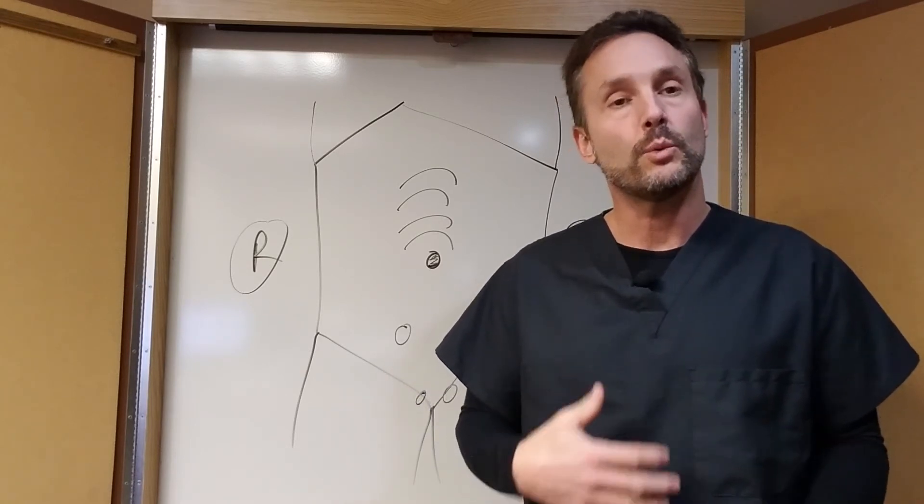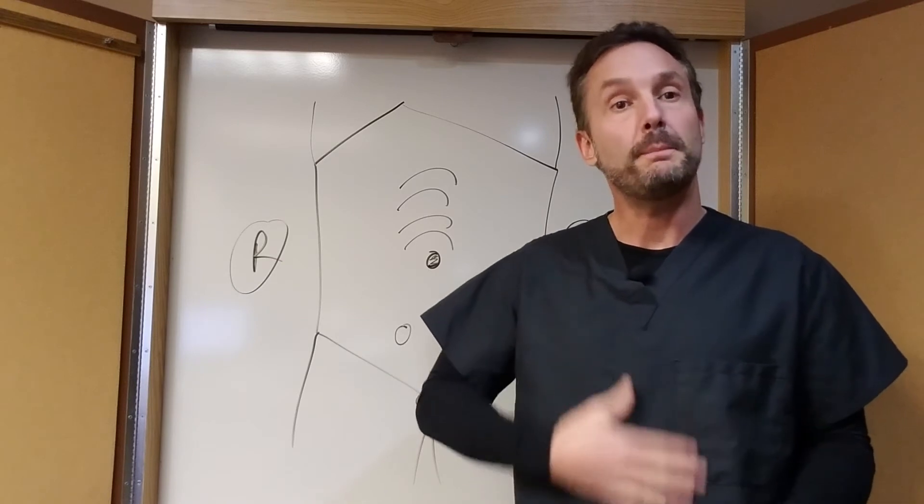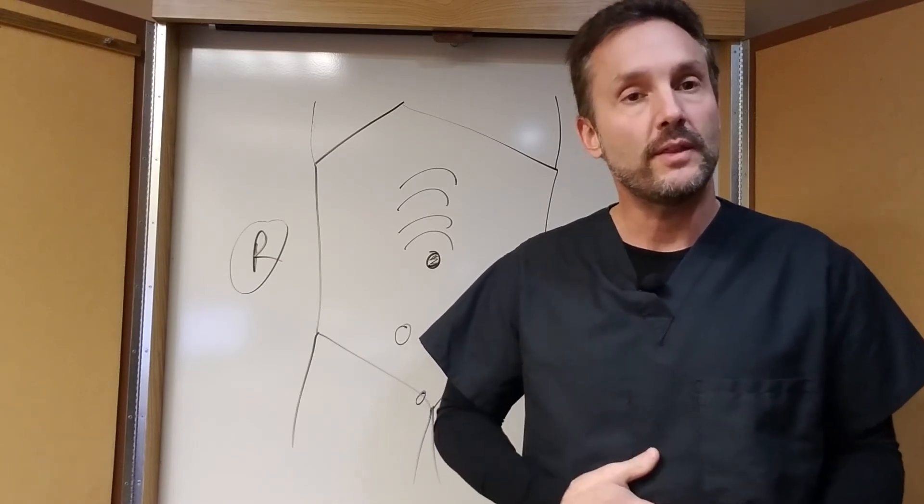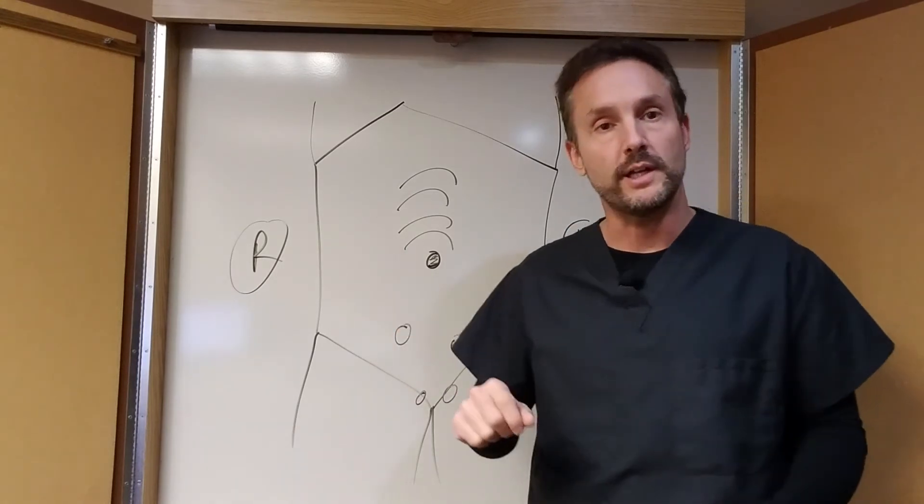If it gets really uncomfortable or really big, the surgeon can put a piece of mesh, which is like window screen on the inside and strengthen that up. So that's called a ventral hernia.